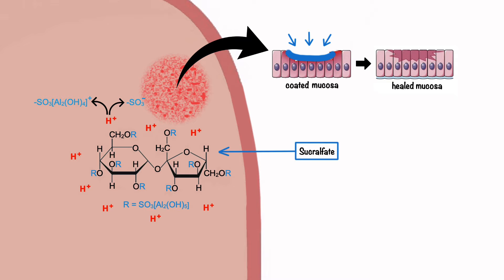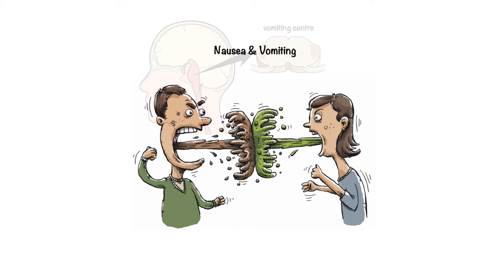Now that we discussed agents used in treatment of peptic ulcers and gastroesophageal reflux disease, let's move on to discuss agents used in another common GI-related malady, that is nausea and vomiting. Nausea and vomiting occurs when an area of the medulla called the vomiting center is stimulated by the central and peripheral neural pathways.